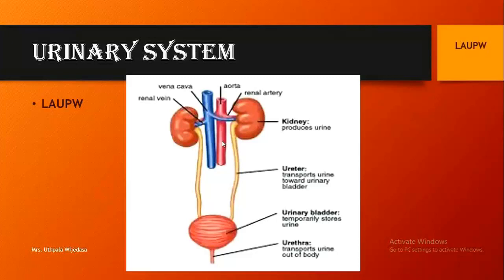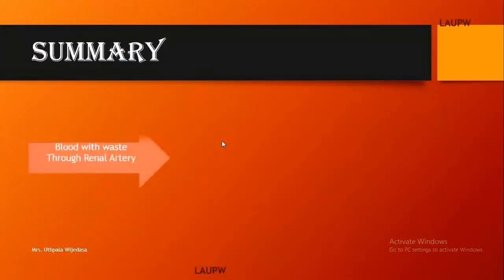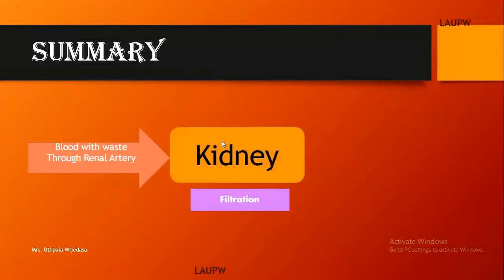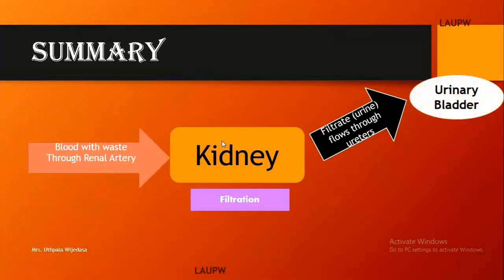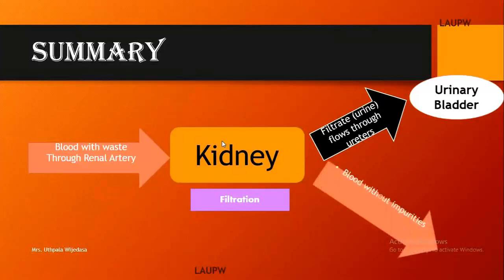Filtration of blood takes place inside each kidney. Blood with waste is taken through the renal artery, which carries oxygenated blood mixed with nitrogenous waste. Filtration of blood takes place inside the kidney, and the filtrate — which we call urine — is taken to the urinary bladder through the pair of ureters. After filtration, the remaining deoxygenated blood, now without impurities, is taken out of the kidney through the renal vein.